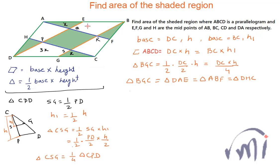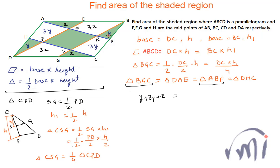The same logic applies on the other side. Assuming the area of triangle DPH as Y, the area of quadrilateral AHPQ is 3Y, and similarly the symmetric counterparts are also Y and 3Y. Since the area of triangle BGC equals the area of triangle ABF, we get Y + 3Y + X = X + 3X + Y, which simplifies to 3Y = 3X, so X = Y.